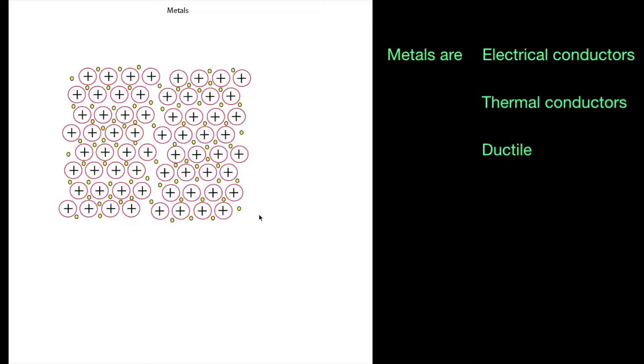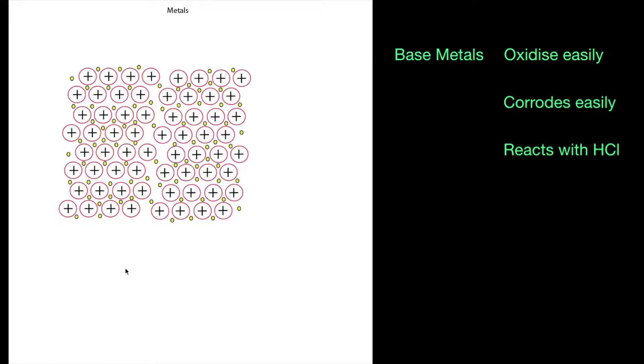Like I said, there are lots of different types of metals. Usually the definition for example base metals - you'll probably hear about the base metals. Alchemists would try and convert base metals into noble metals. Basically a base metal is something like iron, which is classed as a base metal.